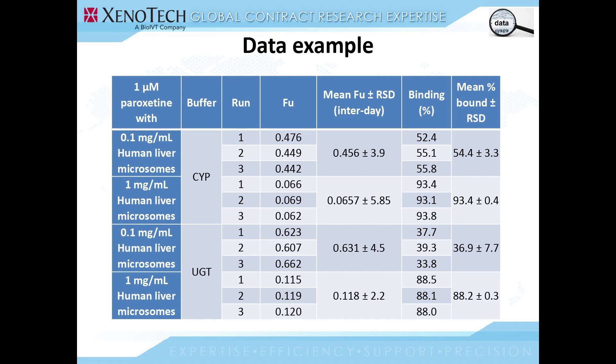Here's a data example in which we used 1 micromolar paroxetine with two different concentrations of human liver microsomes — 0.1 and 1 mg per ml. 0.1 mg per ml is the typical concentration we use for our drug inhibition studies. We tested these with CYP and UGT buffers. For each of these four experiments, we had three separate runs on three separate days, and the results were pretty consistent — the percent CVs or RSDs were less than 5%. Hence, we would be using paroxetine as a positive control for all the contract studies that we offer.